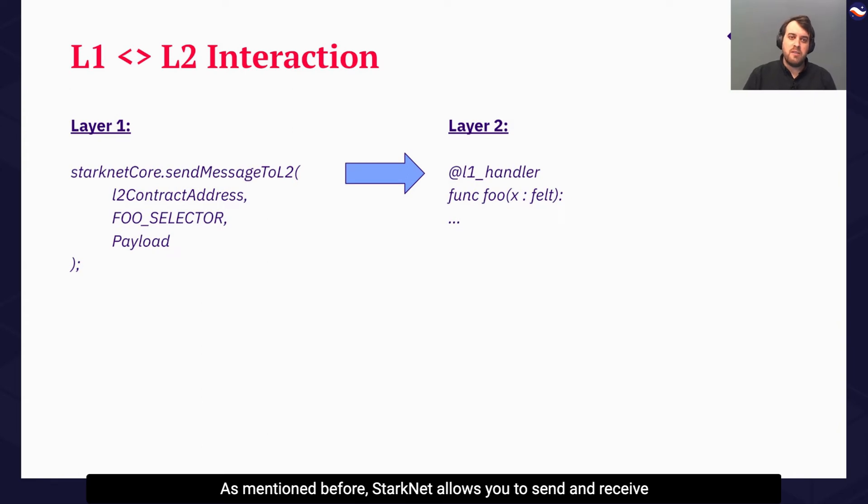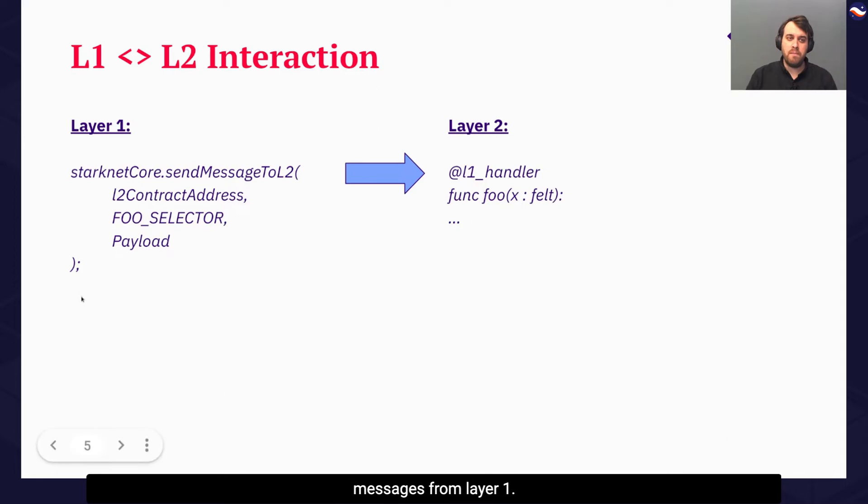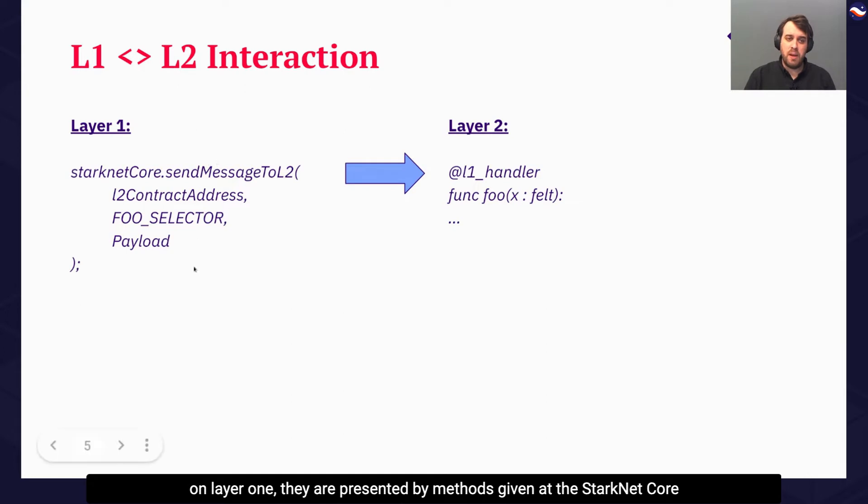As mentioned before, StarkNet allows you to send and receive messages from Layer 1. To facilitate this, we provide the following methods. On Layer 1, they are presented by methods given at the StarkNet Core Solidity Contract, while on Layer 2, they are provided by the StarkNet OS.